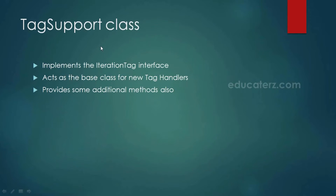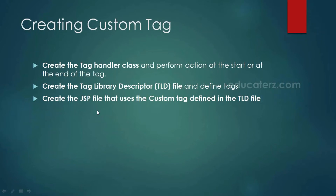TagSupport class implements the IterationTag interface and acts as the base class for new tag handlers. Whenever we want to create a custom tag, the first thing we need to do is extend this TagSupport class. There are three steps to create a custom tag: first, create the tag handler class; second, create the tag library descriptor (TLD file) and define the tags in it; and third, create a JSP file that uses the custom tag defined in the TLD file.